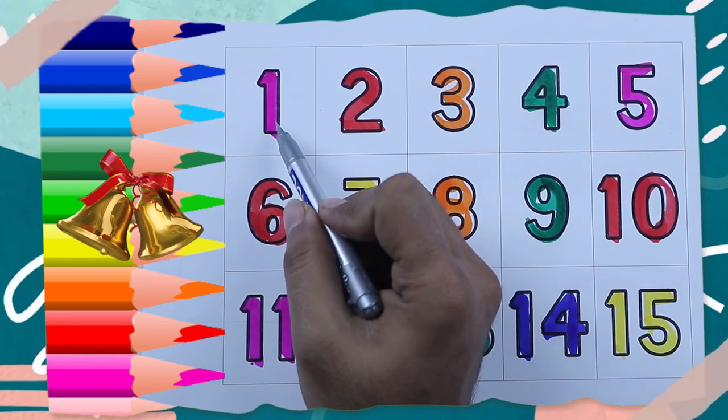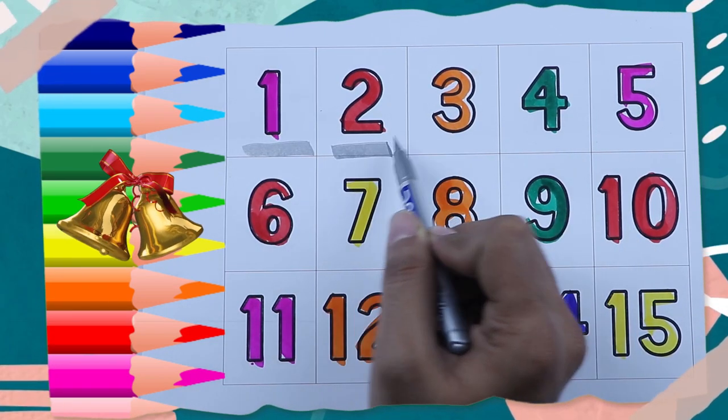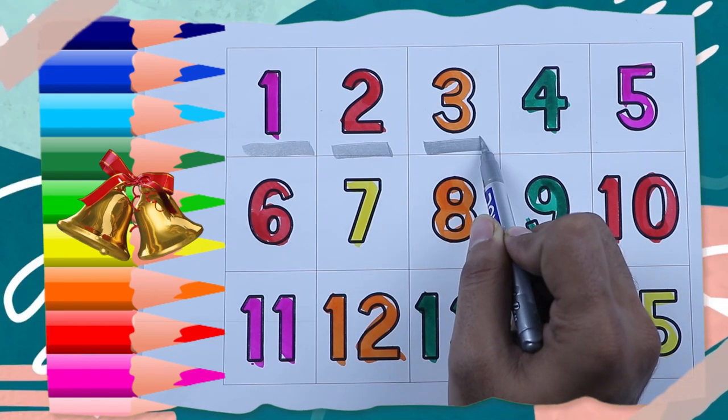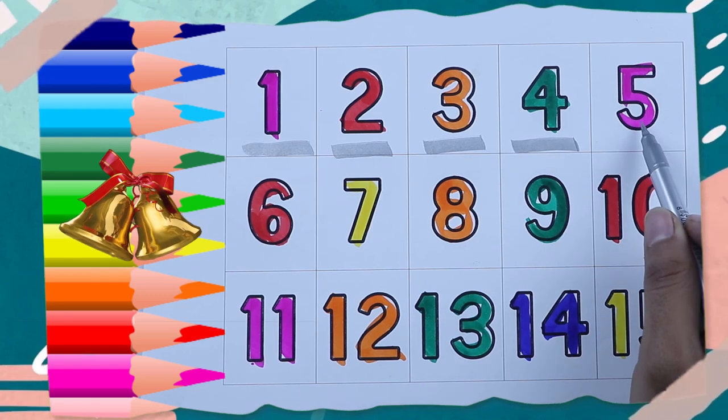It's pink color 1 number, red color 2 number, orange color 3 number, green color 4 number, which color?